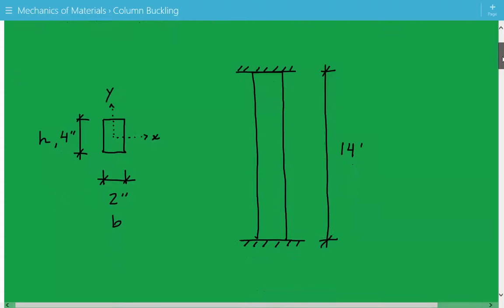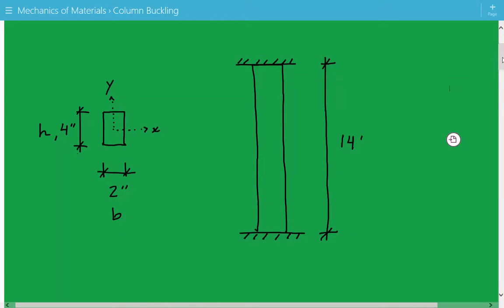Here's our wooden rectangular column, fixed at both ends, with an unbraced length of 14 feet. To the left we have the cross-sectional view, it's 2 inches by 4 inches. The 2 inch dimension we call b, the 4 inch we call h, and then we show the x and y axis, the local axes for the cross-section.